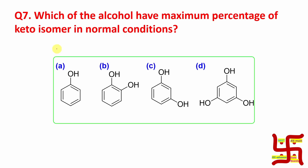Hello students, I am Dr. Tanmay Vishash. I welcome you all to my channel Tanmay Kim. Today's topic of discussion is one MCQ. The question in front of you — I request you please pause the video, try by yourself, and whatever answer you get, write it in the comment box along with a few words of explanation. Now let's start. The question is: which alcohol has maximum percentage of keto isomer in normal condition?